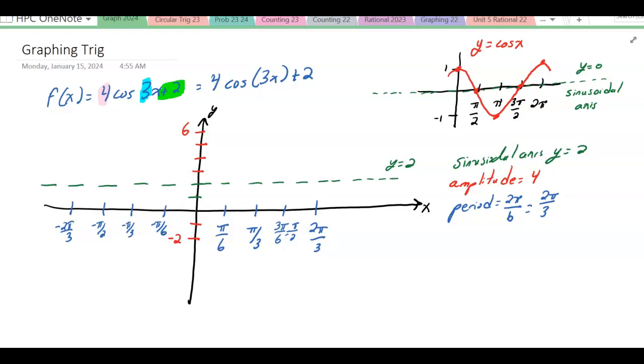Now the cosine curve always starts up at the top. Since the amplitude is 4 and there is no reflection, I'm going to start up here at 6. Then on the next increment, I'll be on the sinusoidal axis. Then I'll be down at negative 2. Back at the sinusoidal axis, and then up at 6 again.